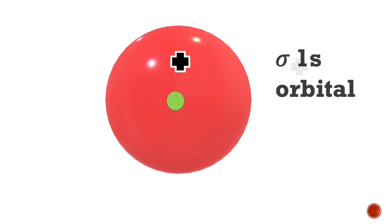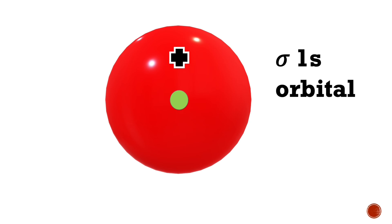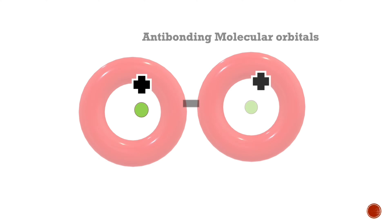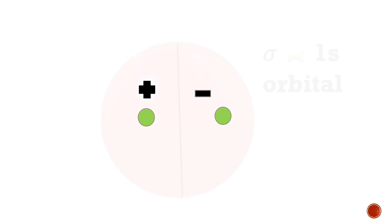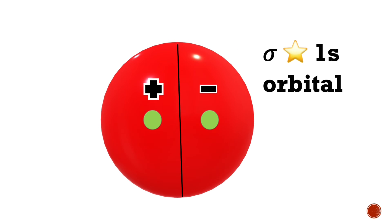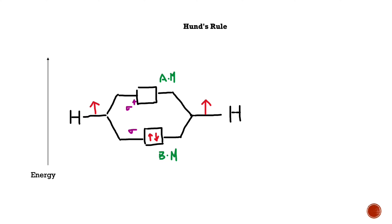Bonding molecular orbitals are represented as sigma or pi orbitals, and antibonding molecular orbitals are represented as sigma star and pi star orbitals. Electrons are filled in molecular orbitals based on the Aufbau principle, Hund's rule, and Pauli's exclusion principle.